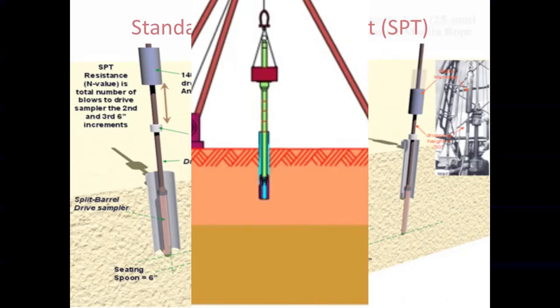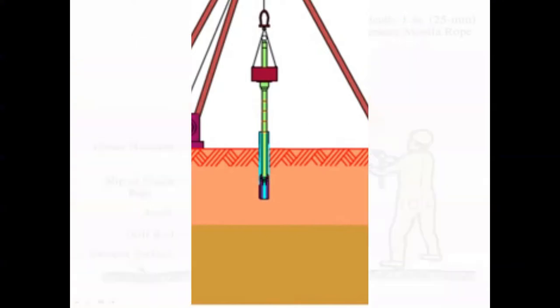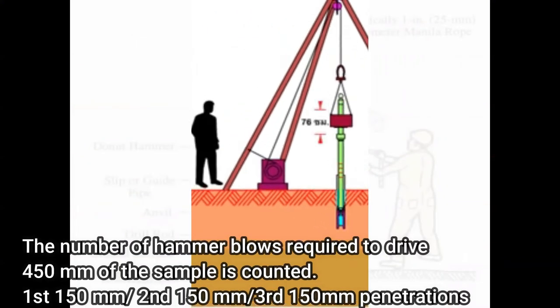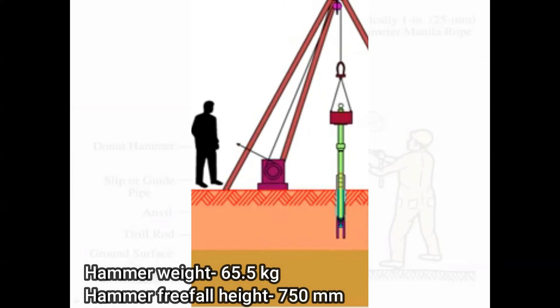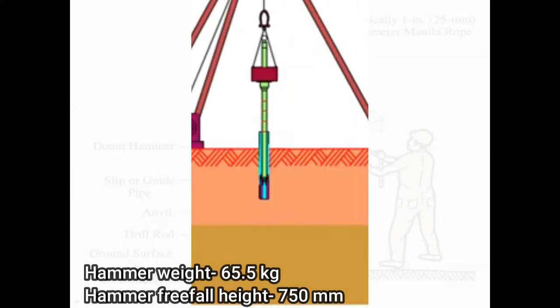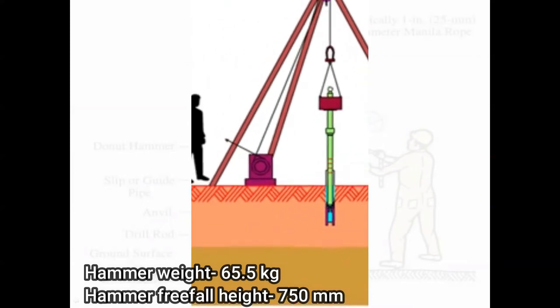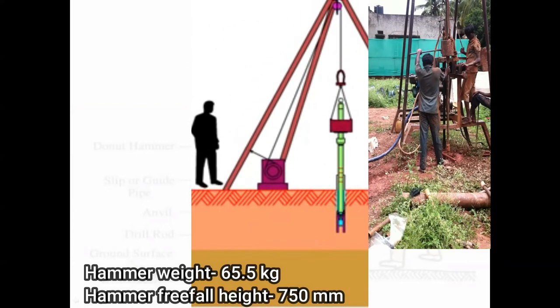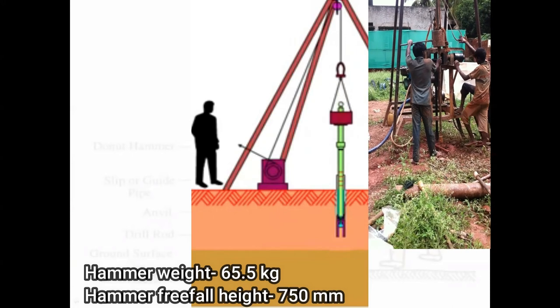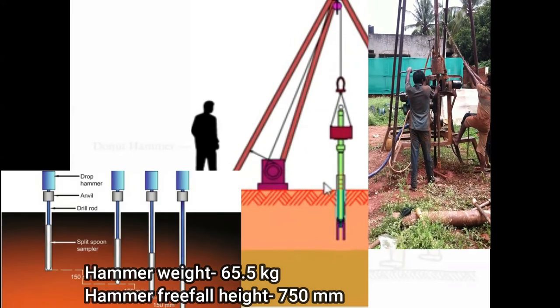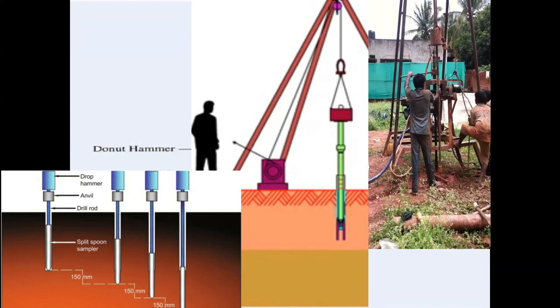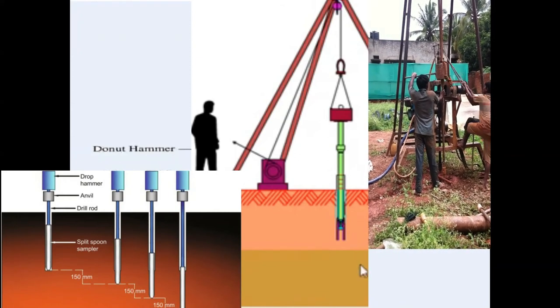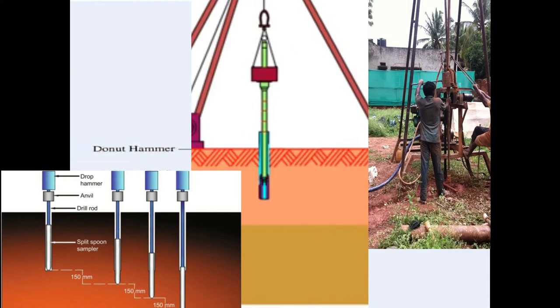The split spoon sampler is driven into the soil for a distance of 450 mm by blows of a drop hammer. The drop hammer weight is 65 kg, falling vertically and freely from the height of 750 mm. The number of blows required to penetrate every 150 mm is recorded. While driving the sampler to ensure the penetration, marking on the drilling rod is made.